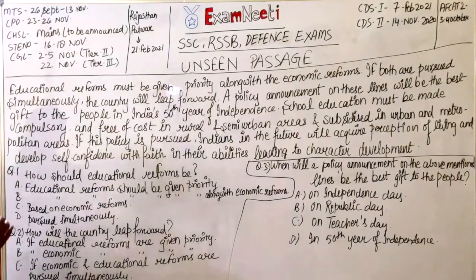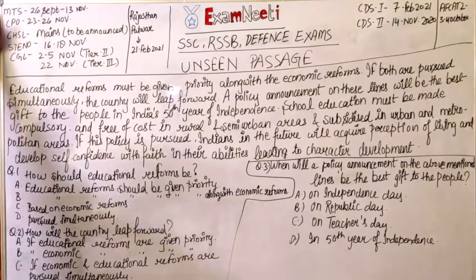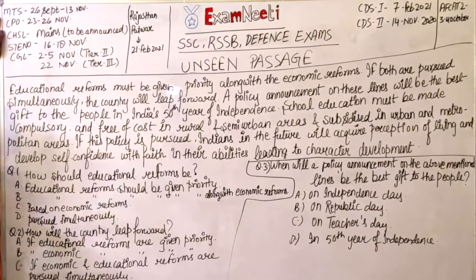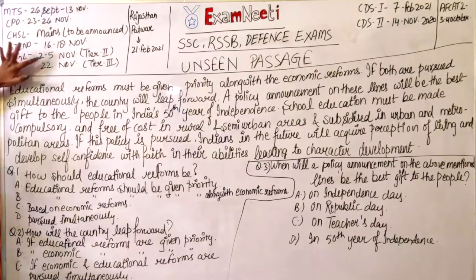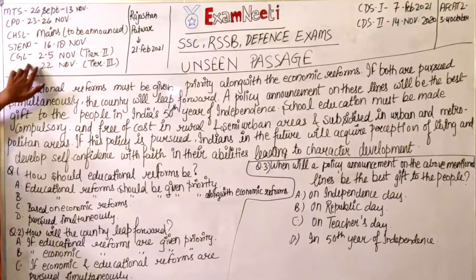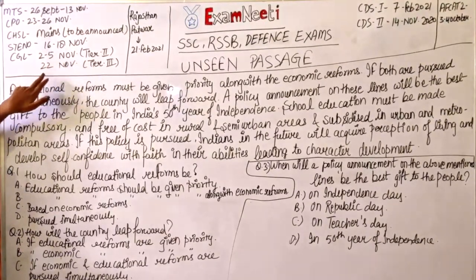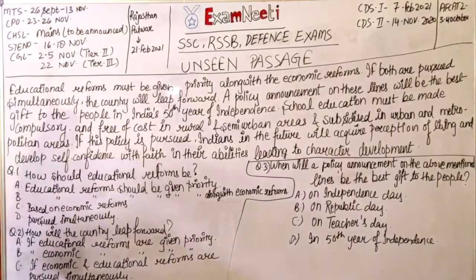Sabse pahle, session shuru karne se pahle, aapko kuch dates apne mind mein rakhni hain. These are the dates you have to keep in your mind. MTS: 26 September, MTS: 13 November, CPO: 23 November. CHSL main exam tentatively November last mein aani hai. Steno: 16 to 18 November. CGL Tier 2: 2-5 November, and Tier 3: 25 November.